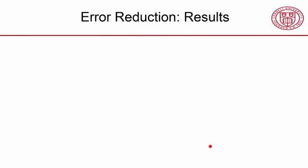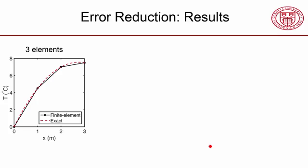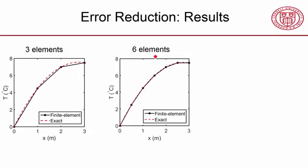So here are the results I got with refining the mesh and also increasing the order of the polynomial. This was our original solution with three elements, linear elements. This is the solution with six linear elements, okay? And you can see that it's better than with three linear elements.